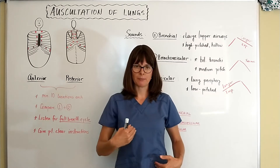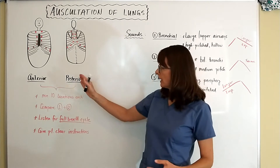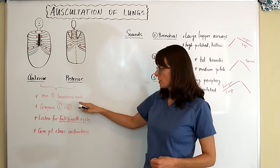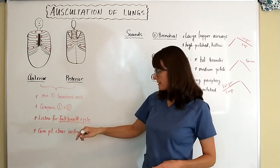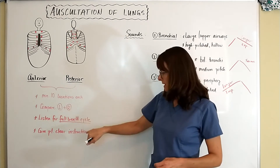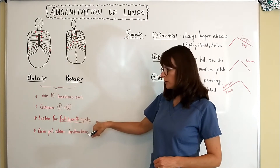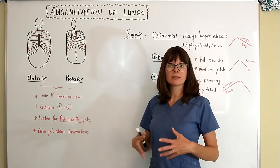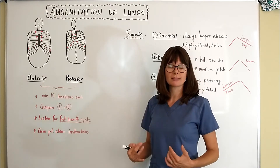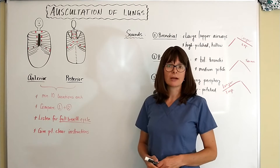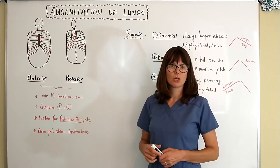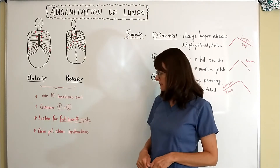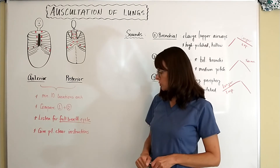Anteriorly and posteriorly, you should have at least 10 locations each — that would mean five on the left and five on the right side — comparing right and left sides. Listen for a full breath cycle; that is probably the most important part. You want to make sure that you listen for the full inspiration as well as the expiration, because certain lung sounds may only be heard on the expiration. If you hurry through it and only listen when the patient inhales, you might miss some abnormalities.